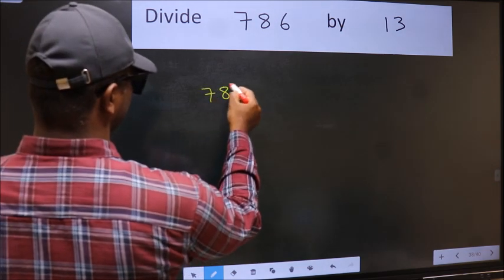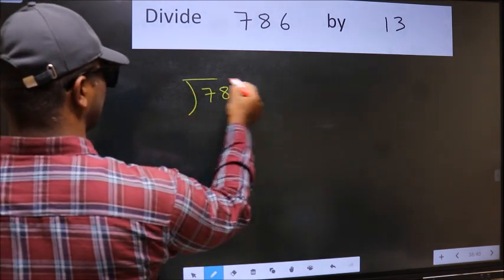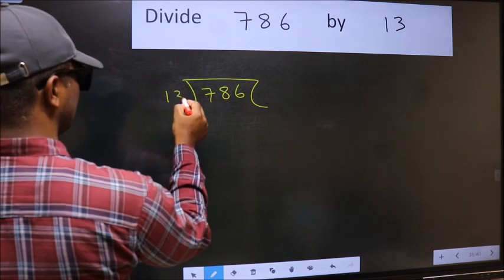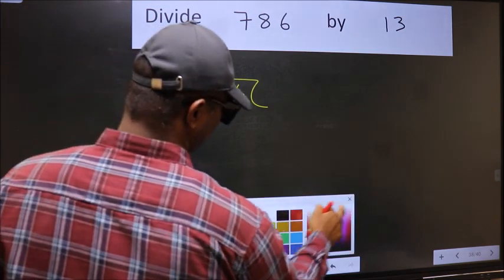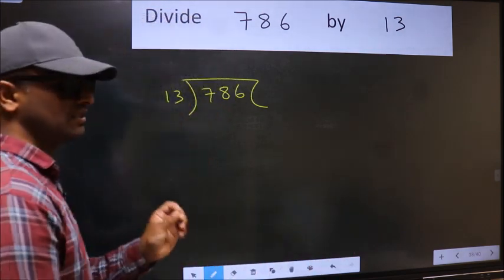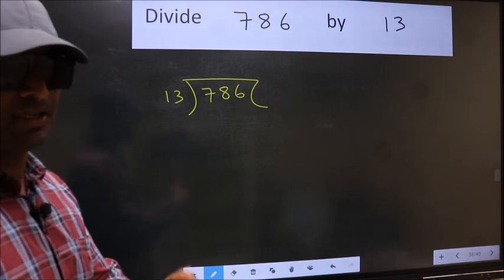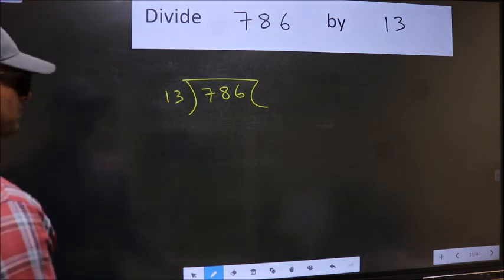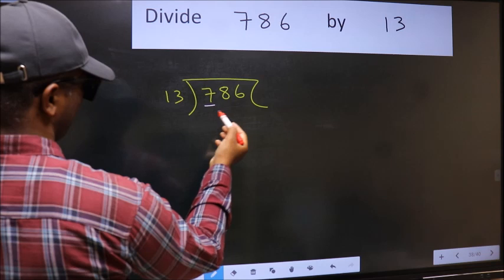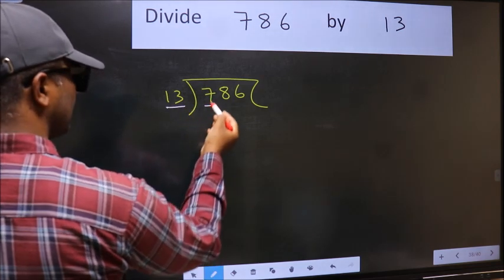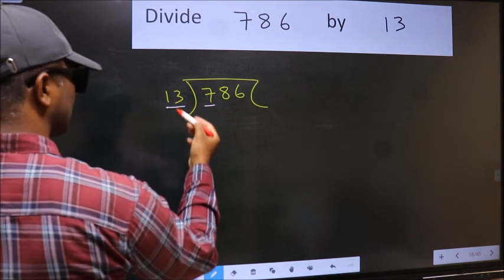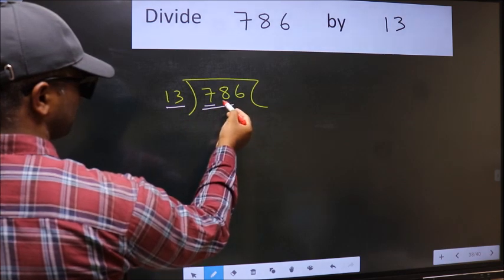786 and 13 here. This is your step 1. Next, here we have 7 and here 13. 7 is smaller than 13, so we should take two numbers: 78.